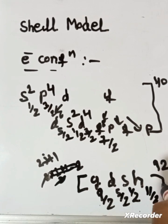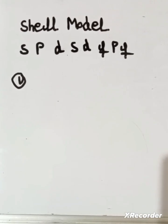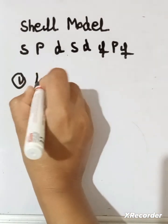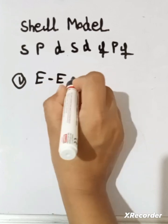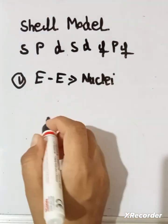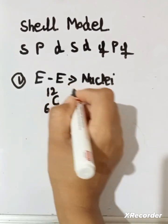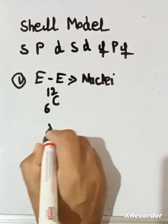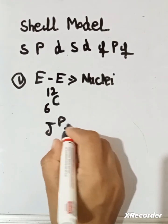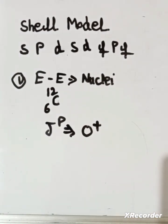92 nucleons fill in this manner. Now we discuss spin and parity. The first case is even-even nuclei. Even-even nuclei means both the proton number and neutron number are even — for example, Carbon-12. For even-even nuclei, spin and parity is always zero positive (J^π = 0+).